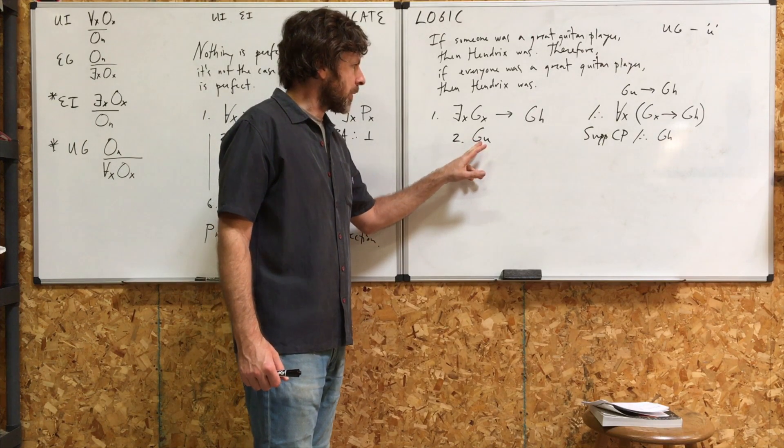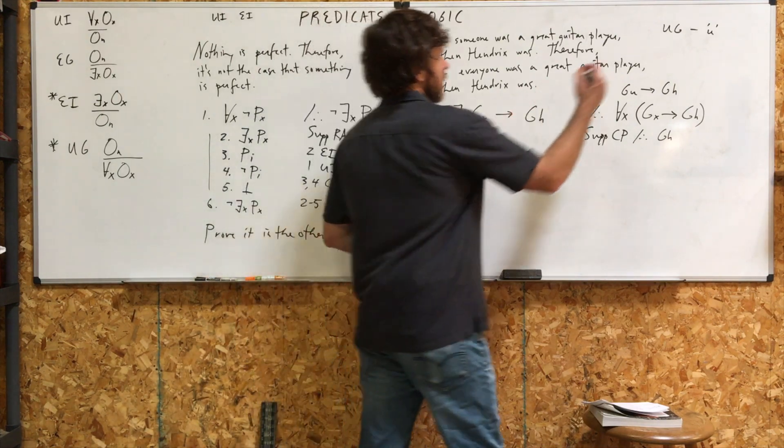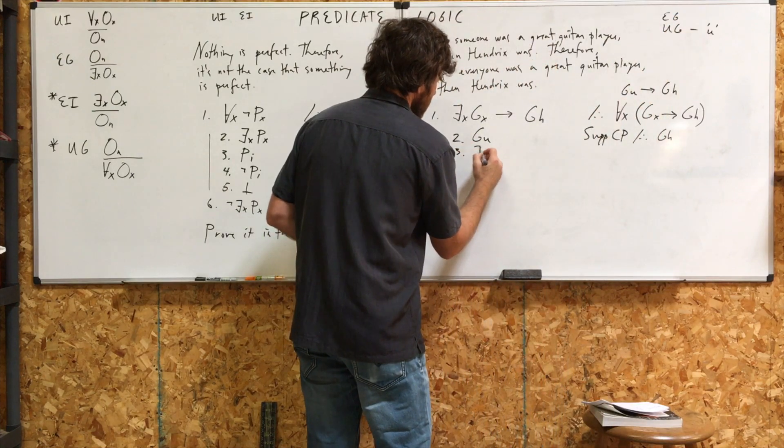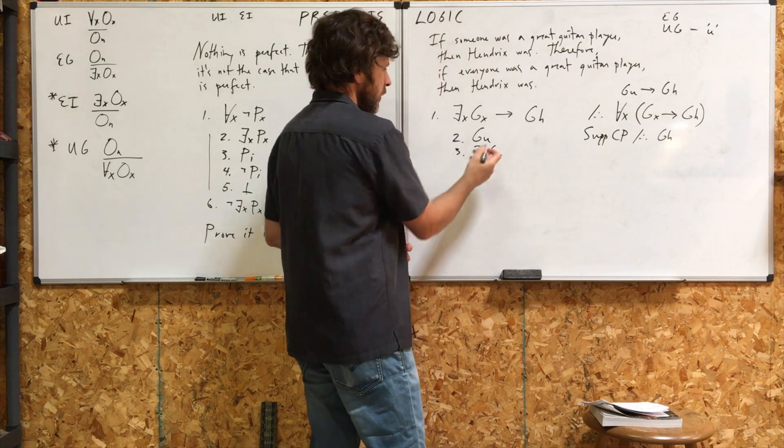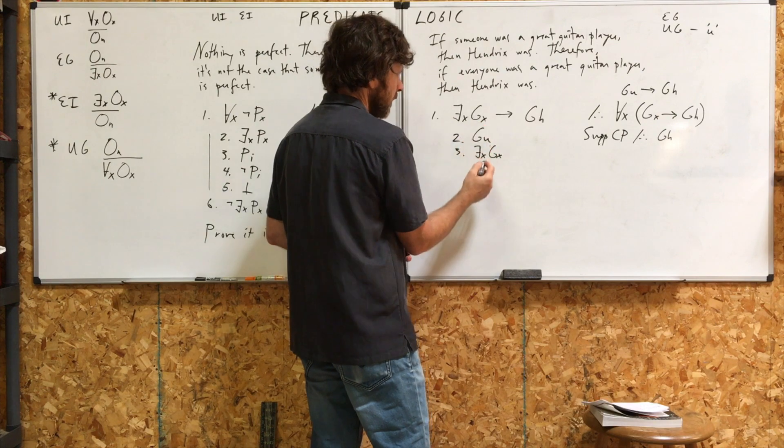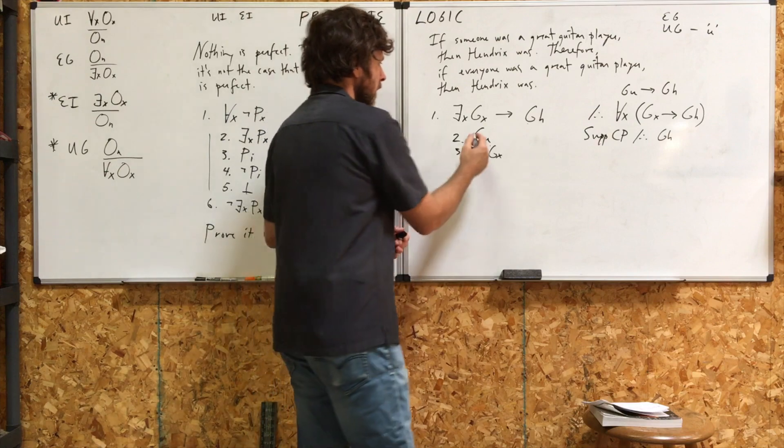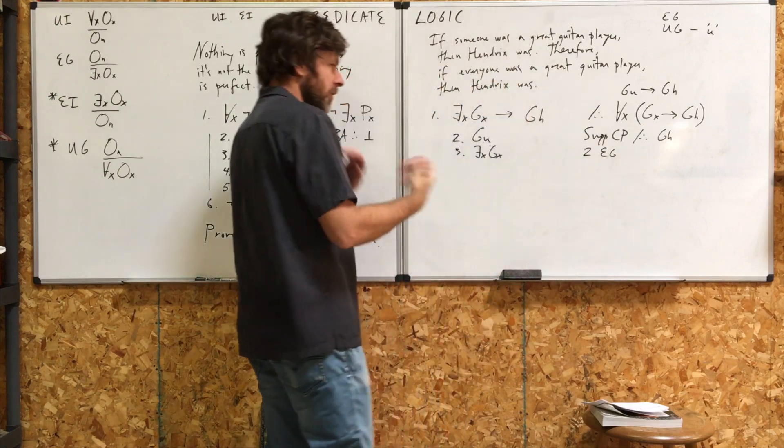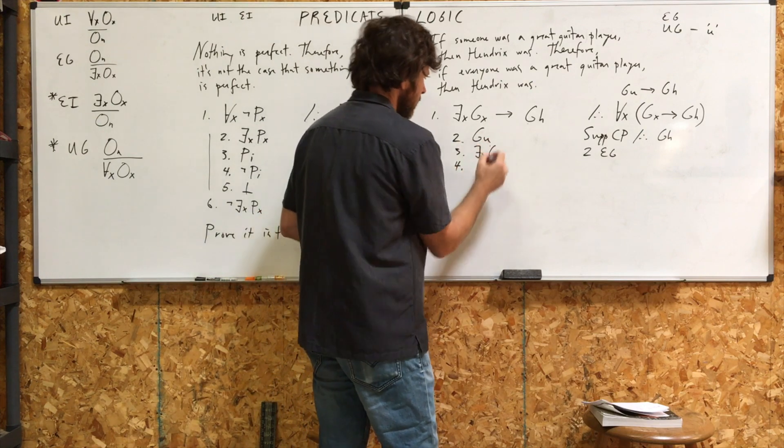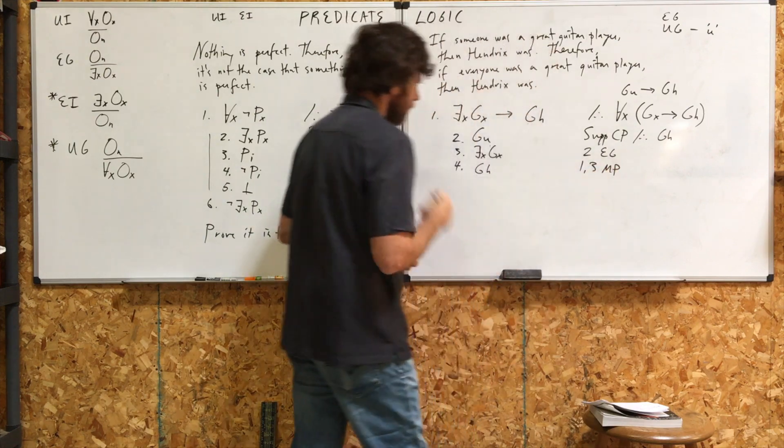Sup CP, and our target is GH. Given that we have GU, we can actually derive this antecedent right here. So, it looks like we do need to use another rule, EG. Line three, you're going to get, for some X, it's G. If U is G, then something is G. Look, we get this antecedent right here. And we're trying to get GH. So, it looks like we're in good shape here. Two, EG. No restrictions on EG, so we can use that easily. Line four, now we can use modus ponens to get GH. One and three MP.